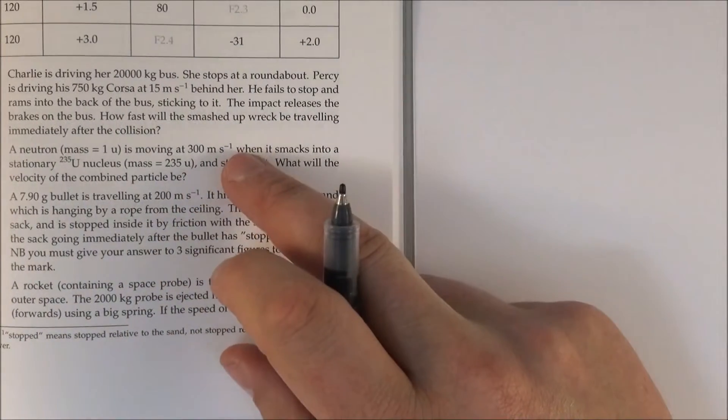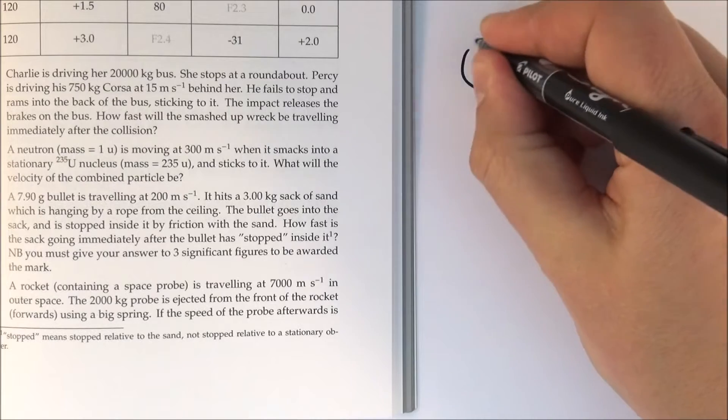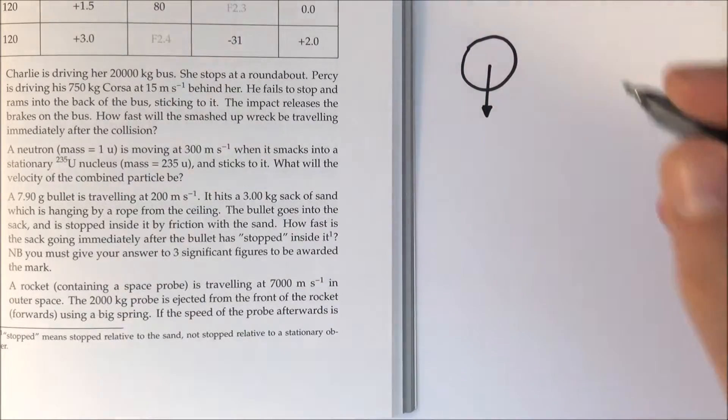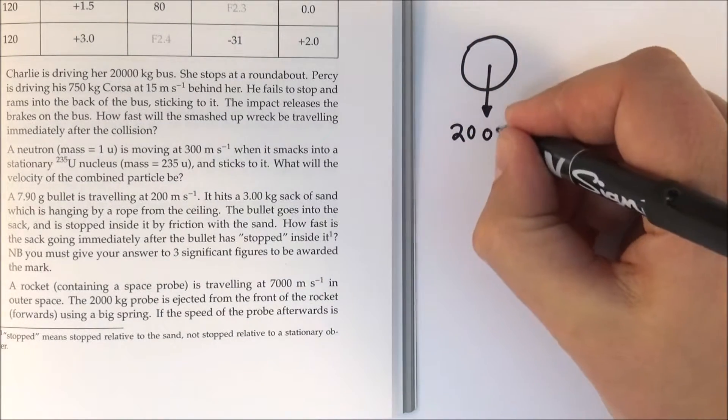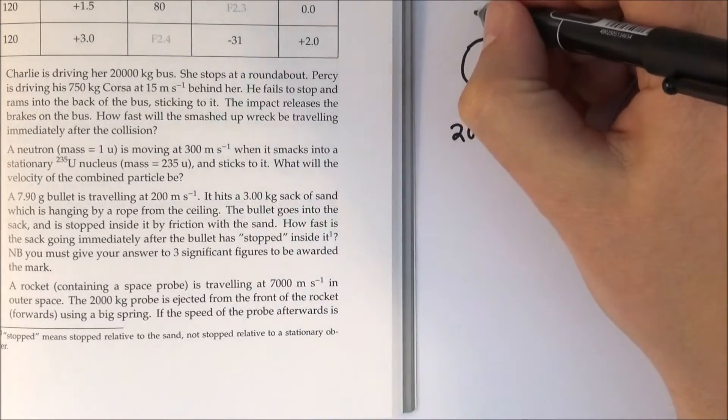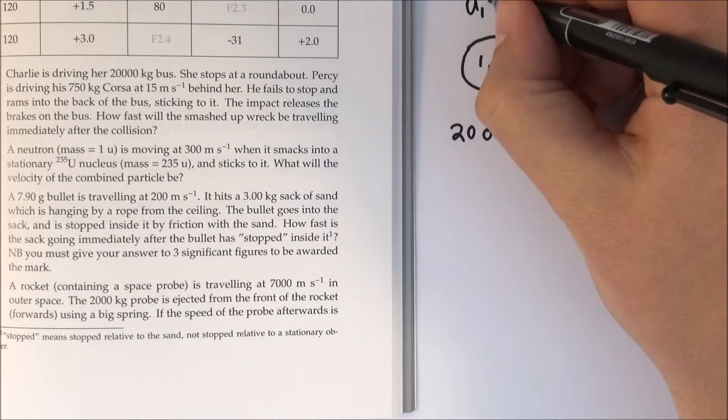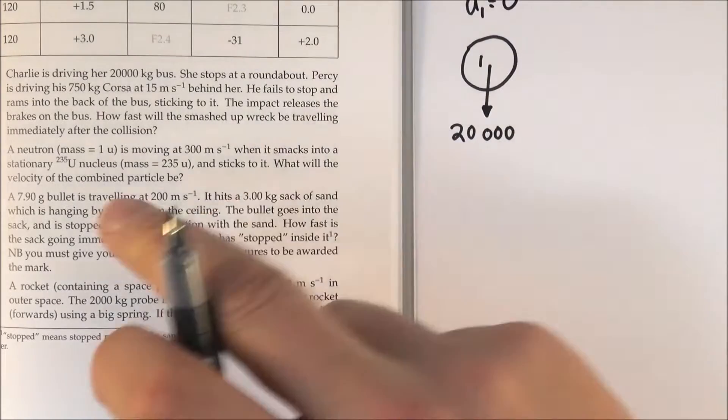So to answer this question I'm going to start with a diagram. First of all I'm going to draw a big circle for the bus, and the bus has a mass of 20,000 kilograms. I'm going to call this object number one, and U1, its initial velocity, is equal to zero because it's stationary.